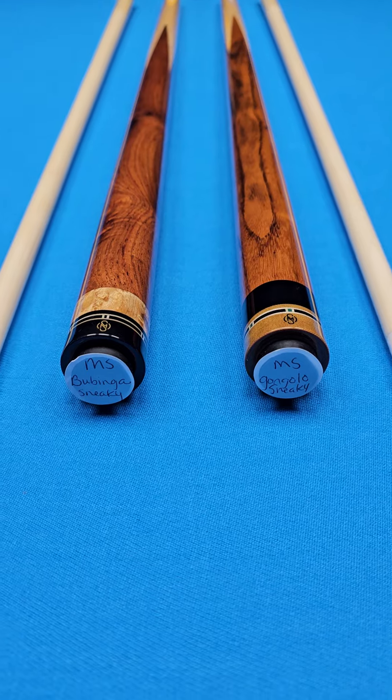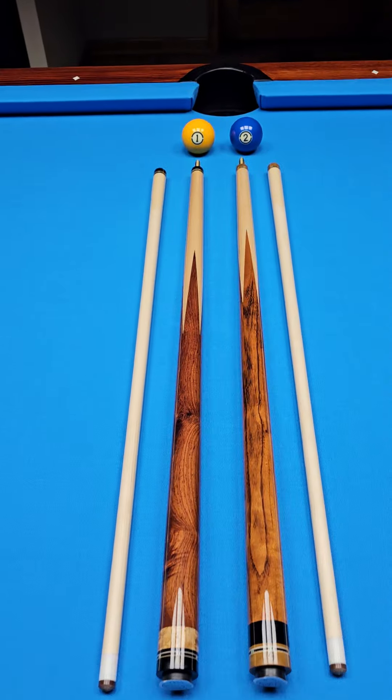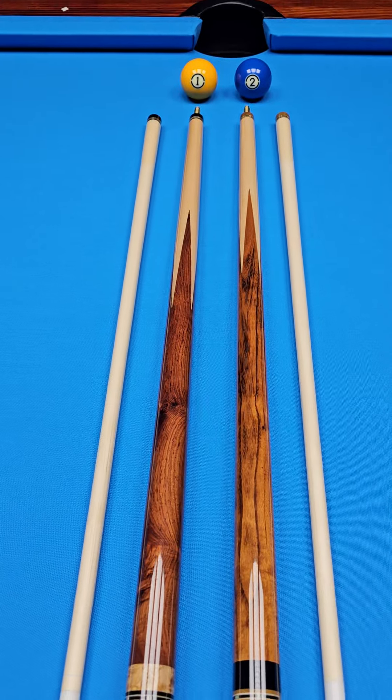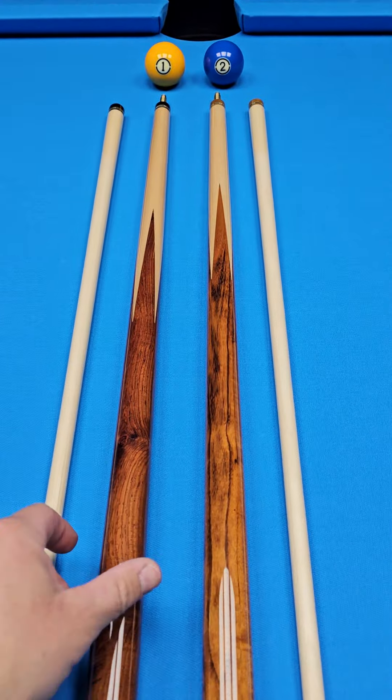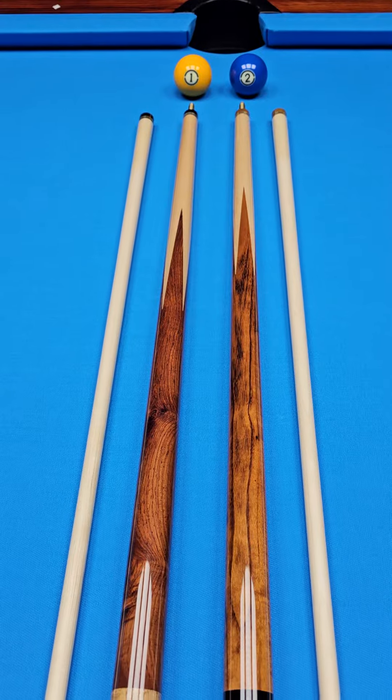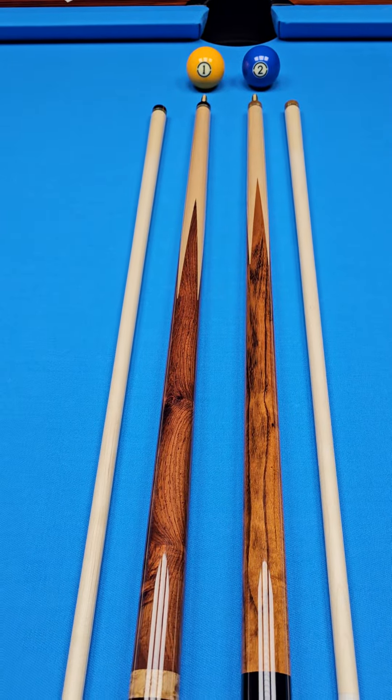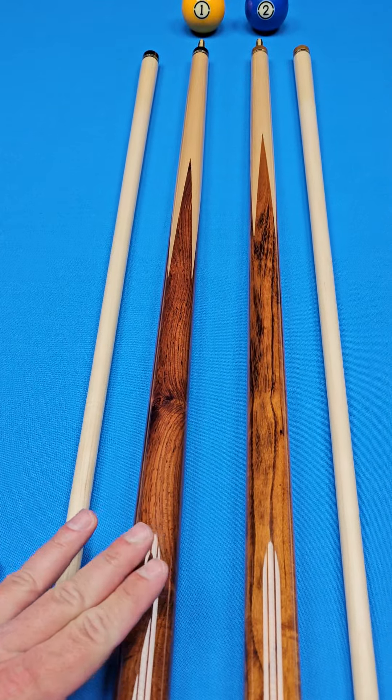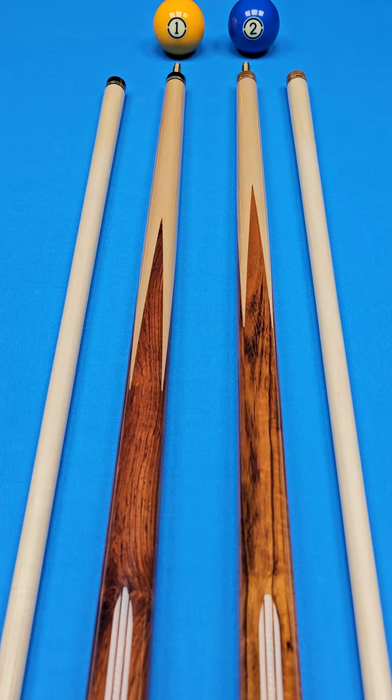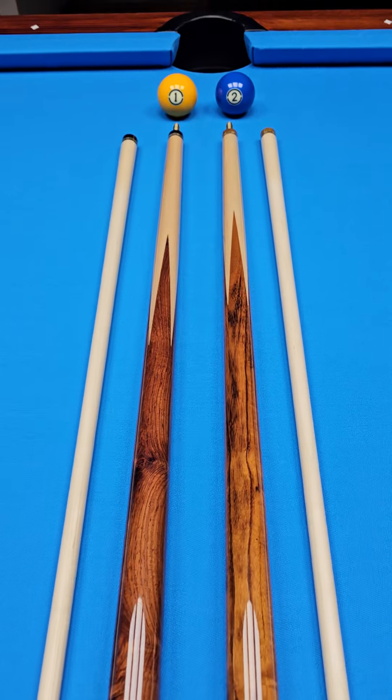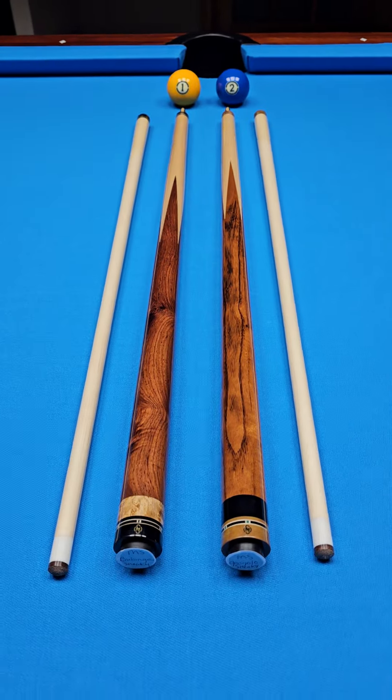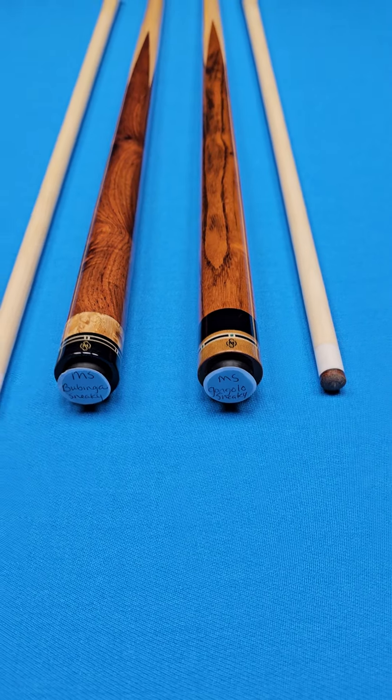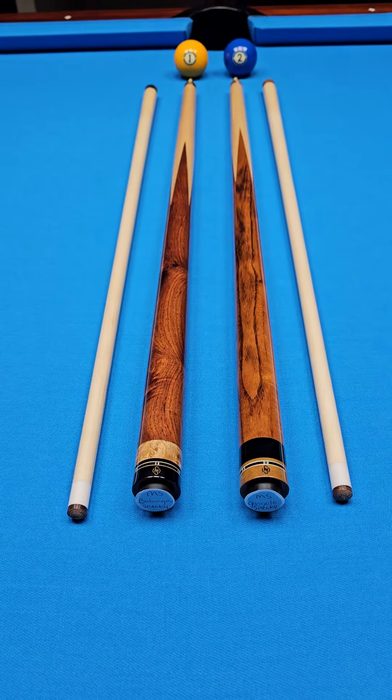What I mean by that, many cue makers, and there's nothing wrong with this, they will buy a blank, for instance from Smelke or from Prather or from one of the places that make the blank, and then they'll build a sneaky off of it or they'll build a full splice. Many of the cues that you see us sell, that's how they're born. They're born as a blank which obviously started as a cue made by one person and then another person finishes it. They play great.